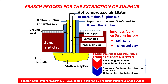During the extraction of sulfur, we have three concentric pipes of different diameters. These concentric pipes are drilled into the sulfur deposits. We have the outermost pipe, the middle pipe, and the innermost pipe.